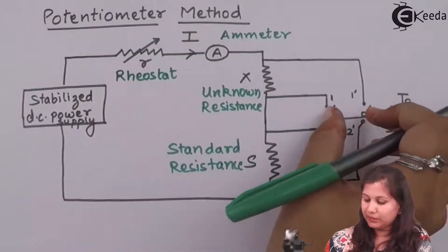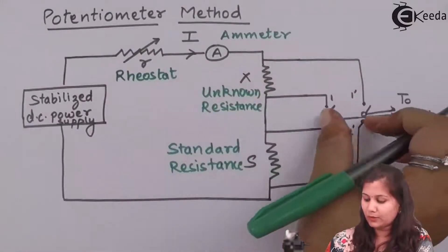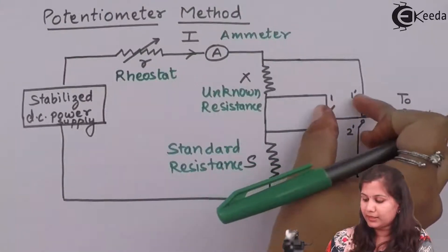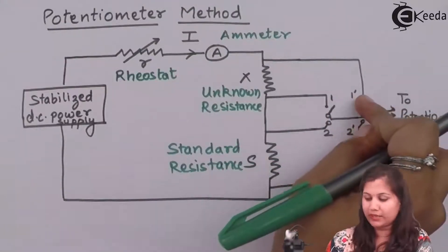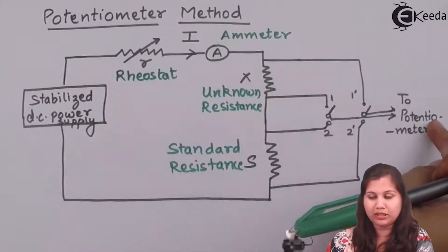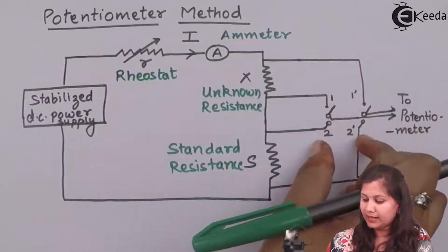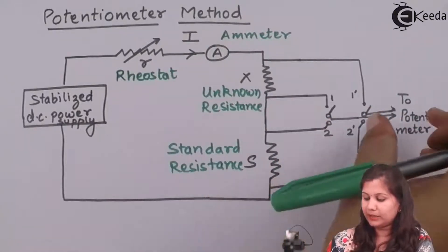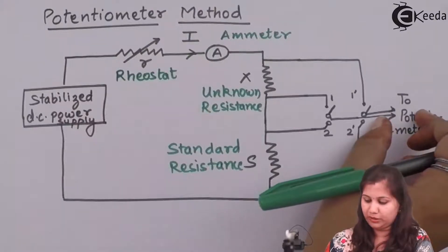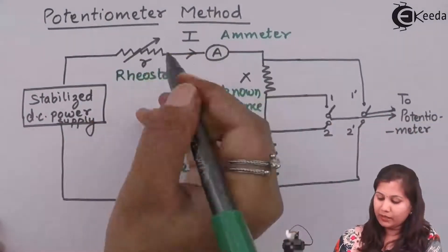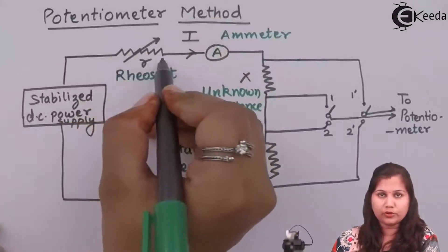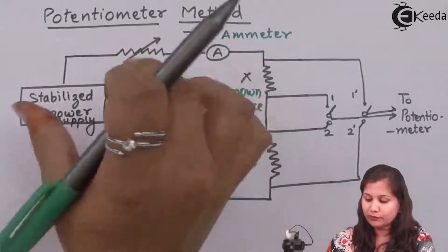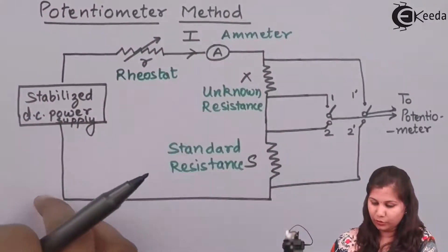And then we have a two-pole double-throw switch. This switch can be connected to the unknown resistance or to the standard resistance. When the connections are made at the 1-1' position, X is connected to the potentiometer; when the switch is at 2-2', the standard resistance is connected to the potentiometer. This is the circuit. We vary the value of the rheostat so that we can change the value of the current, so the working current for this circuit can be set through this rheostat.